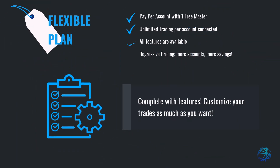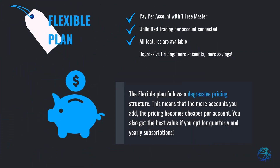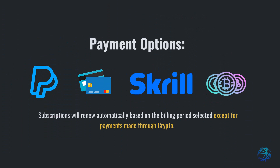It also allows you to access all features offered by Duplicium so you can customize your trades as much as you want. The flexible plan follows a digressive pricing structure. This means that the more accounts you add, the pricing becomes cheaper per account. You also get the best value if you opt for quarterly and yearly subscriptions. You can pay through PayPal, Credit Card, Skrill, and yes, we accept crypto. Please note that your flexible plan will renew automatically except if you use crypto as your payment option.